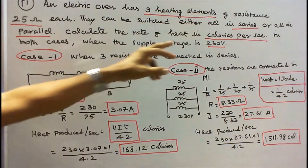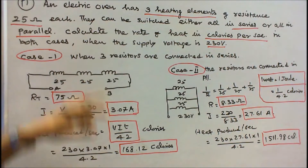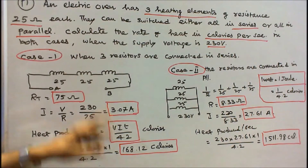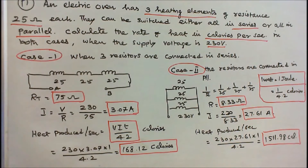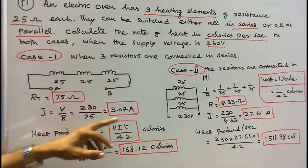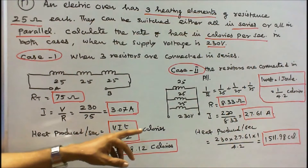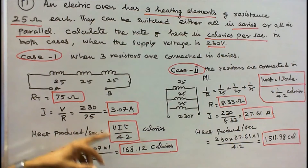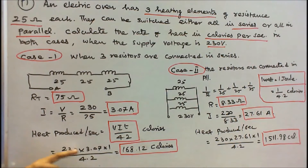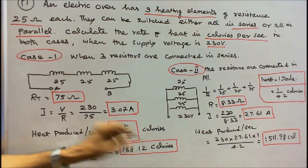Once we know the voltage and current, and time is given per second, T = 1. Therefore heat produced per second = V × I × T divided by 4.2 calories. Substituting: 230 × 3.07 × 1 divided by 4.2 = 168.12 calories.